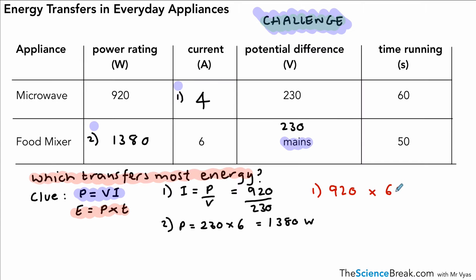So for the first one, the microwave's power rating is 920, and it ran for 60 seconds. And the second one, the power rating is 1380, and it runs for 50 seconds. Do those calculations, and for the first one, you get an answer of 55,200. And the second one is 69,000. Remember, both of those are energy transfers, so they're both in joules. Okay, so that was a slightly challenging, not the most challenging you're going to get, but slightly challenging in that we had to use two equations to solve all the answers.